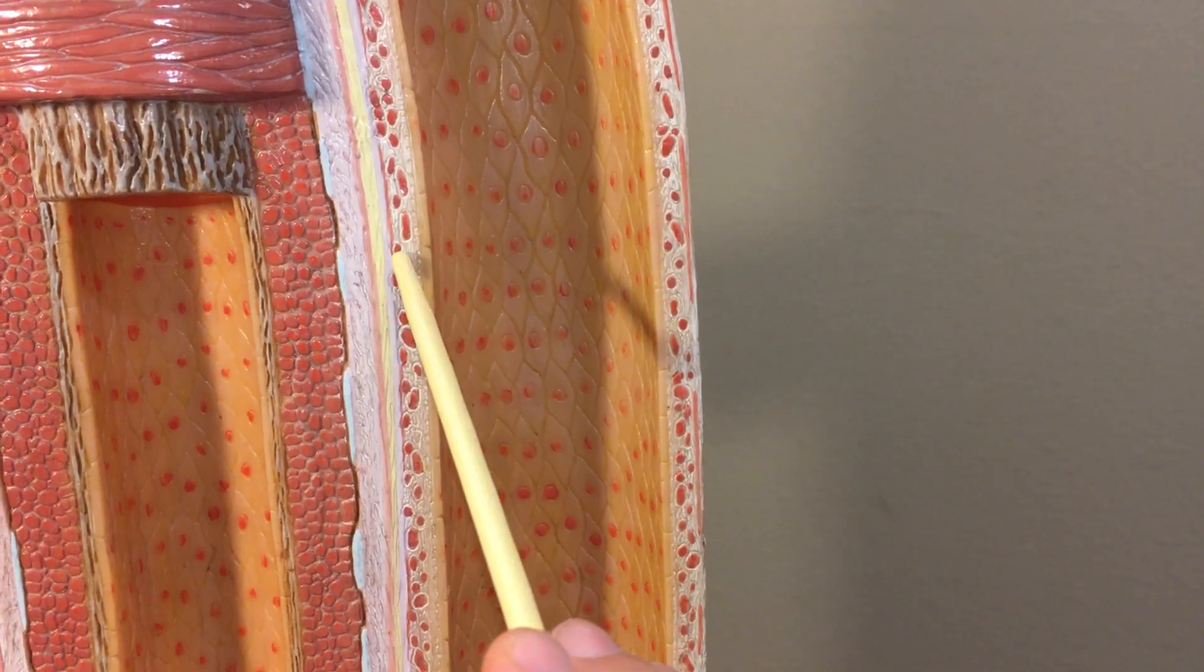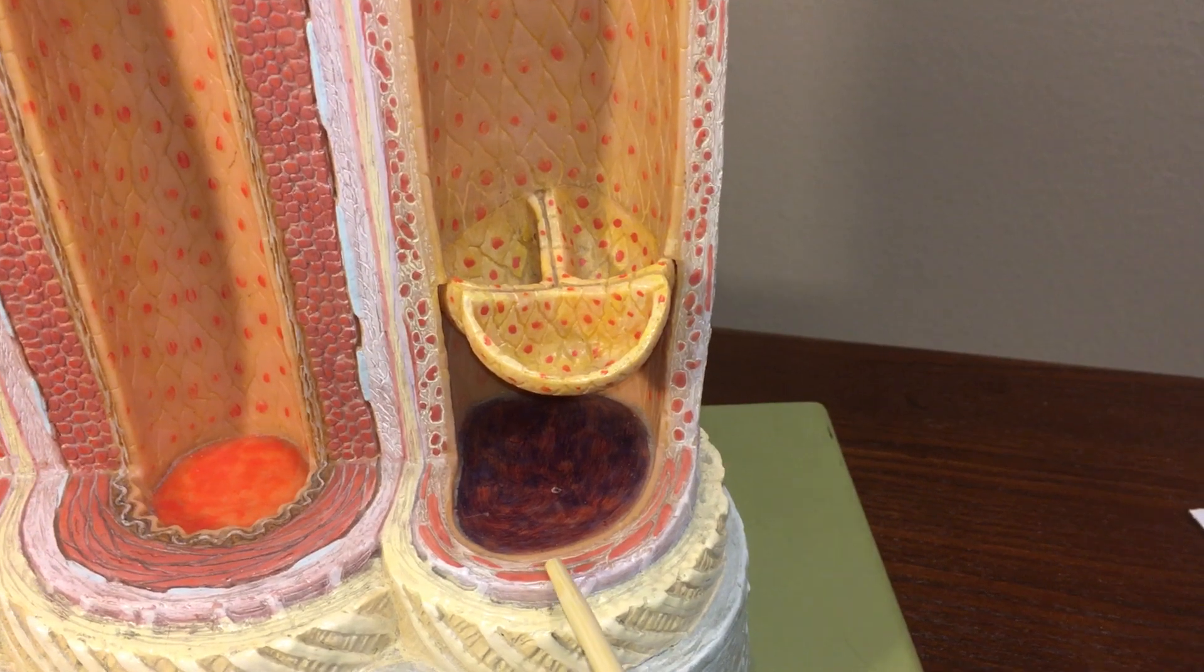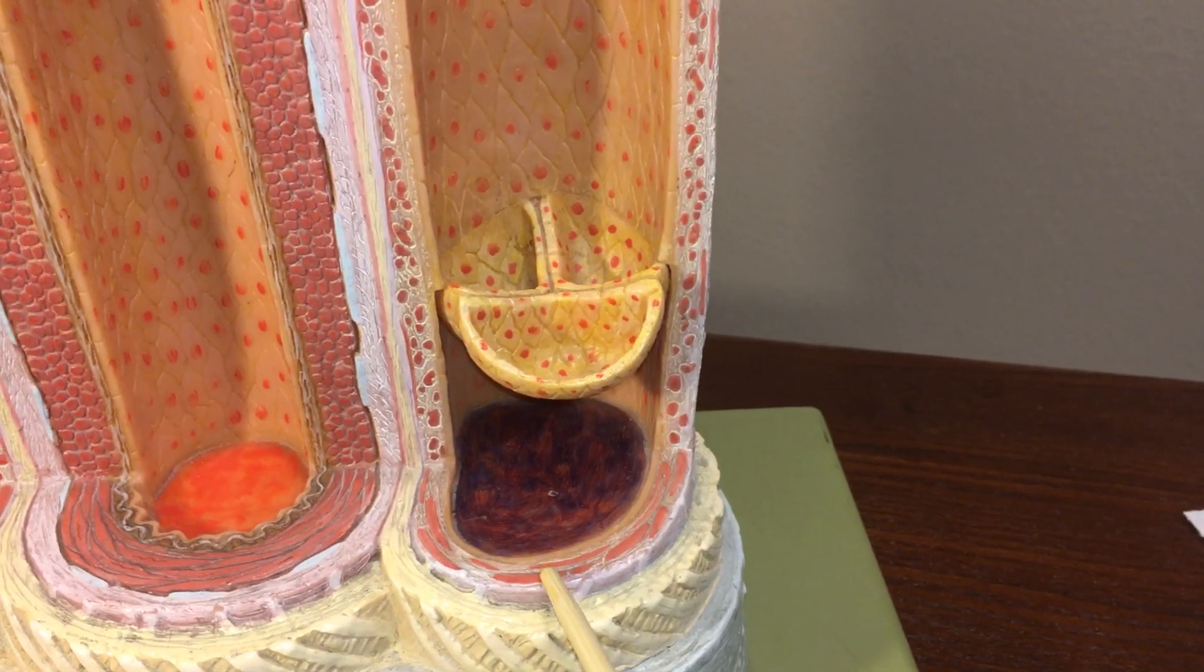And then you go right into a little bit of smooth muscle. And you can see down here a little bit of smooth muscle. That would be the tunica media.